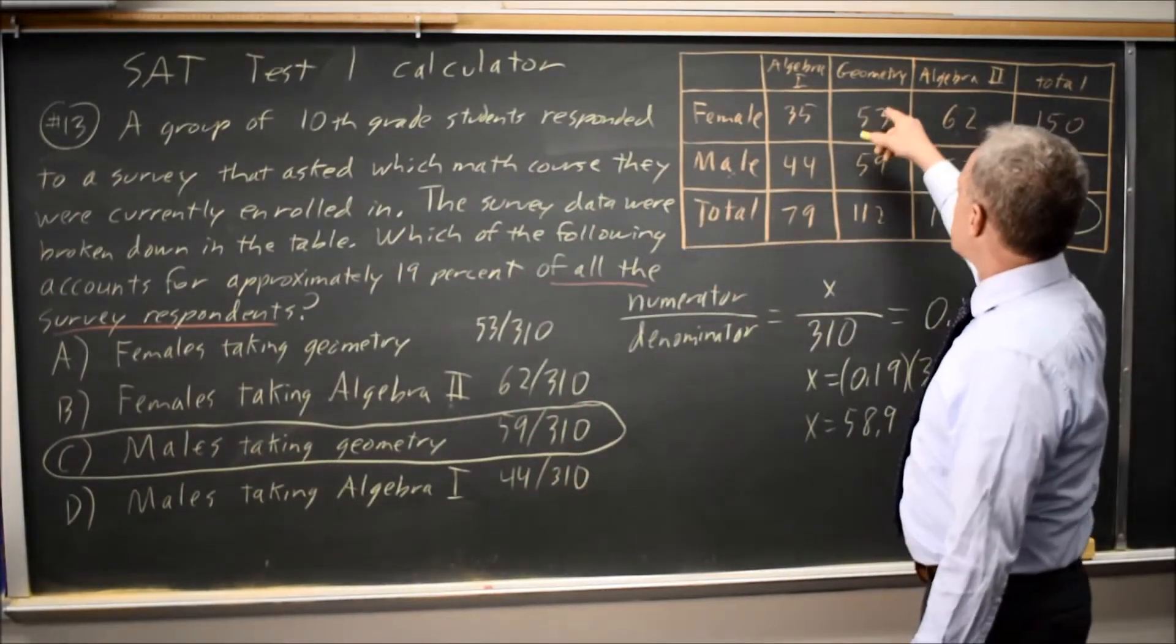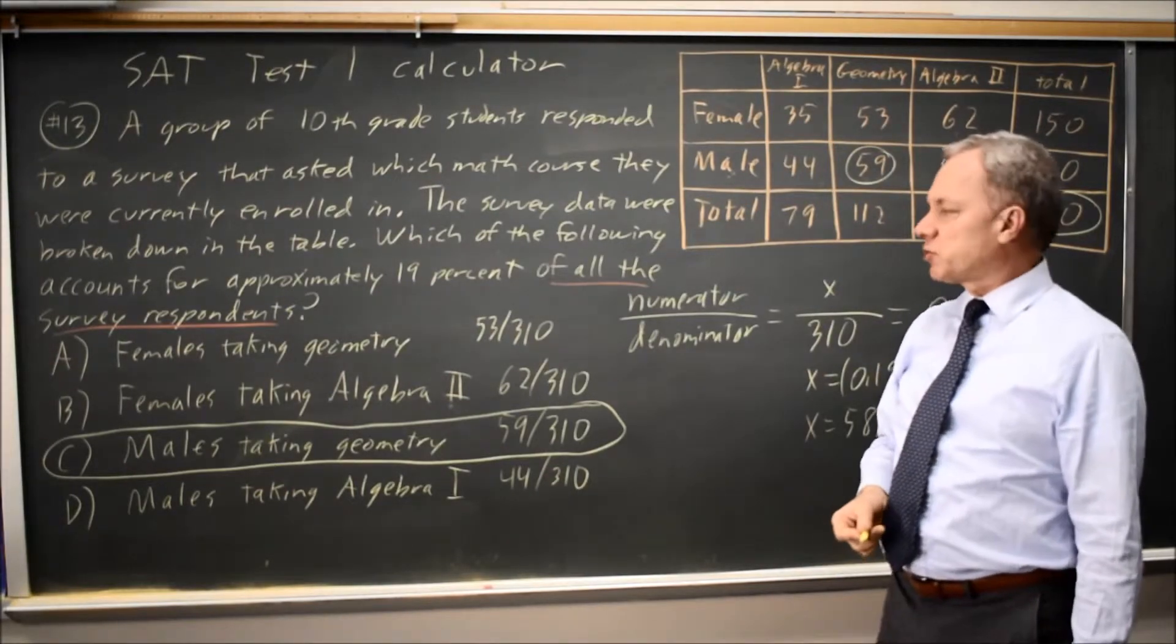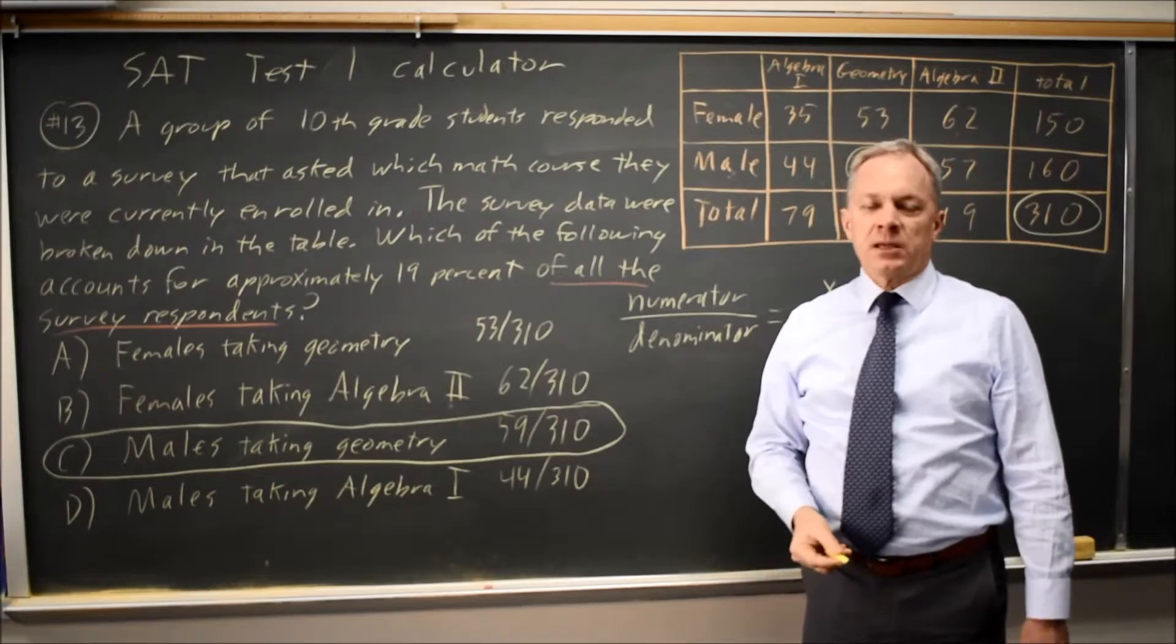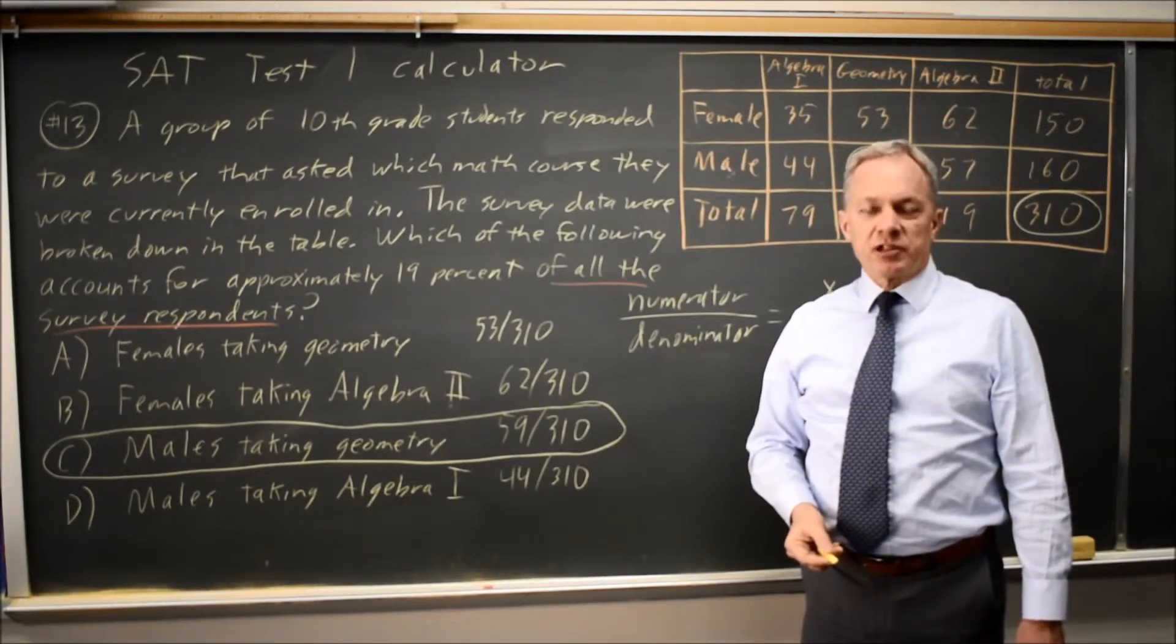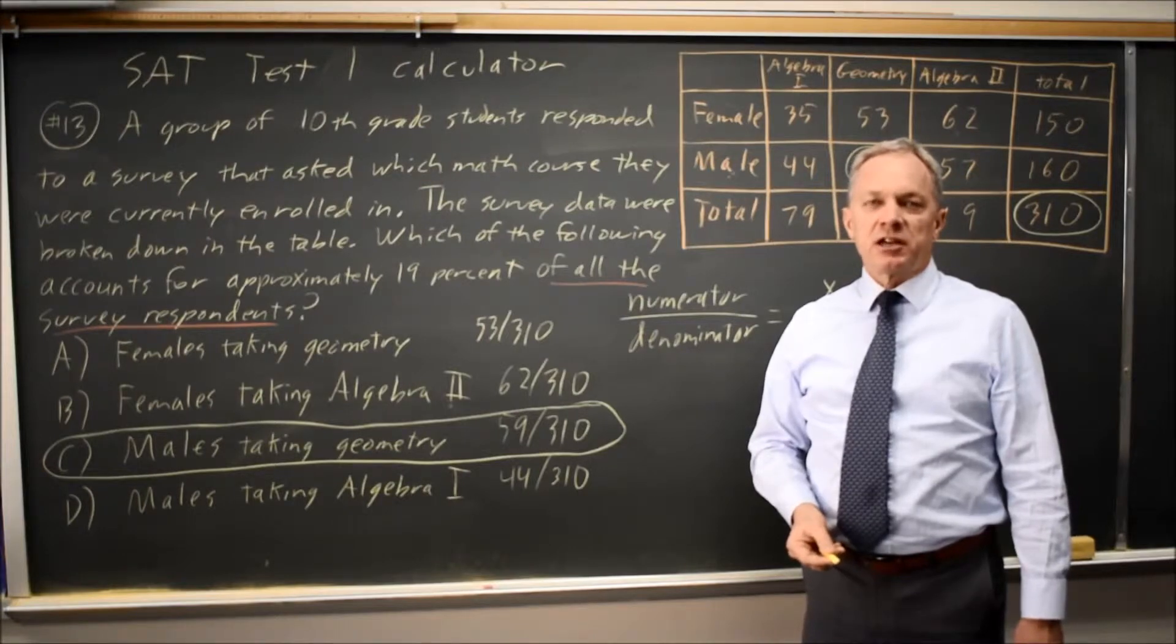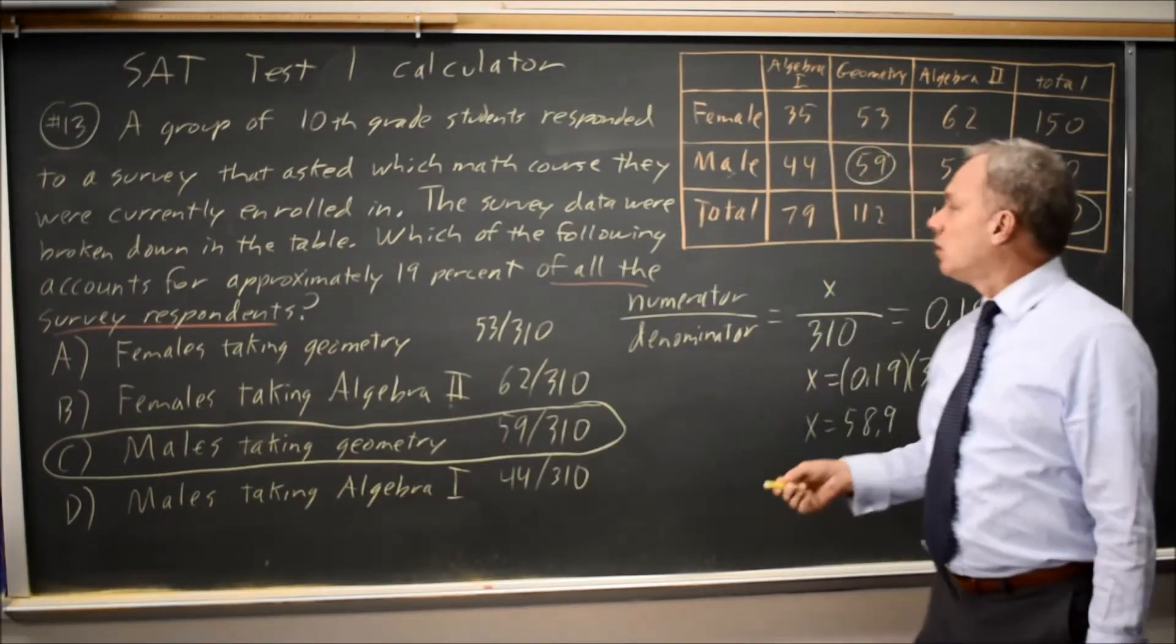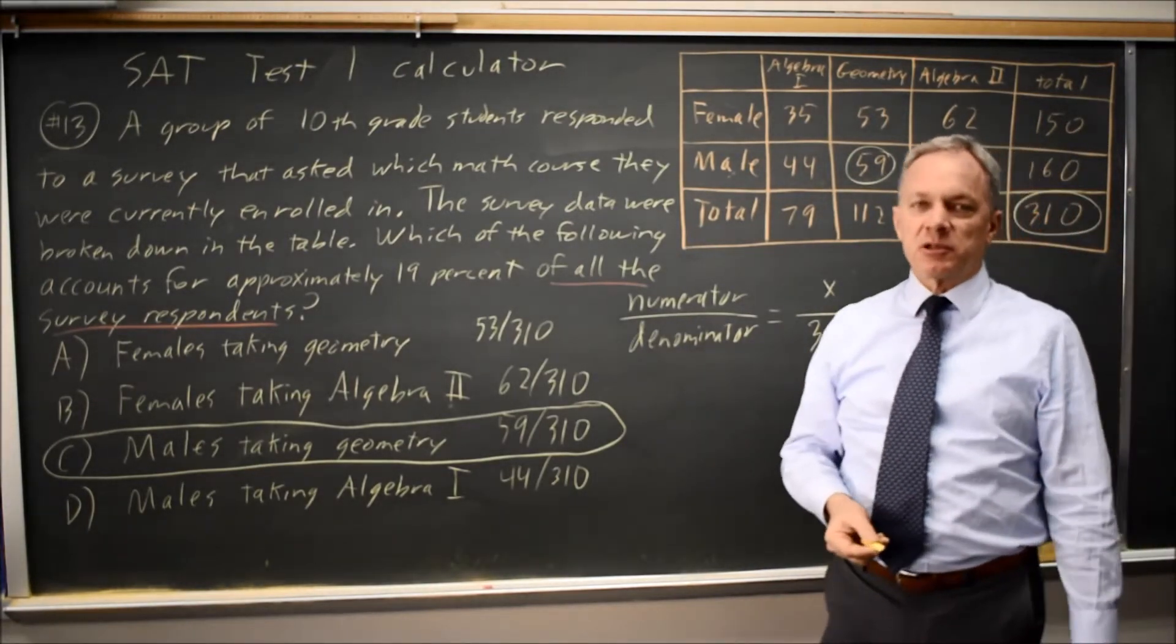Males taking geometry, male geometry, that's approximately 19%. So the correct answer would be C. When you're working with these tables with two categorical variables, always carefully identify your denominator based on the words of the question. Remember, that could be one or more rows, one or more columns, or the entire table.